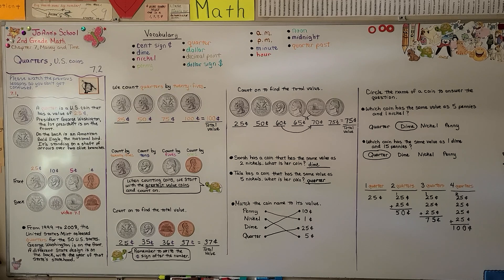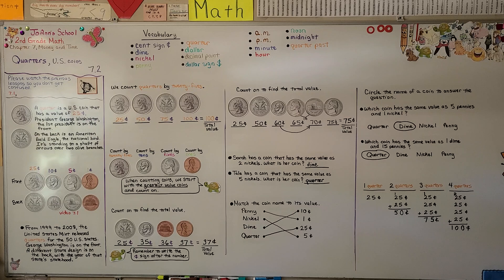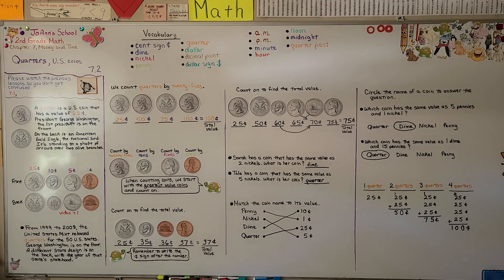You can get some play money and practice counting coins, or make your own play money and write one cent, five cents, 10 cents, 25 cents on each little piece of paper to show the value of the coin you made. Our next lesson, 7.3, we're going to count collections of coins. I'm going to practice some more. Have a really good day — I hope you'll join me next time. Bye.